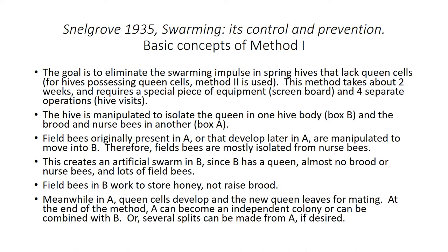The hive is manipulated to isolate the queen in one hive body, Box B, and the brood and nurse bees in another, Box A. Field bees originally present in A or that develop later in A are manipulated to move into B. Therefore, field bees are mostly isolated from nurse bees. This creates an artificial swarm in B, since B has a queen, almost no brood or nurse bees, and lots of field bees.